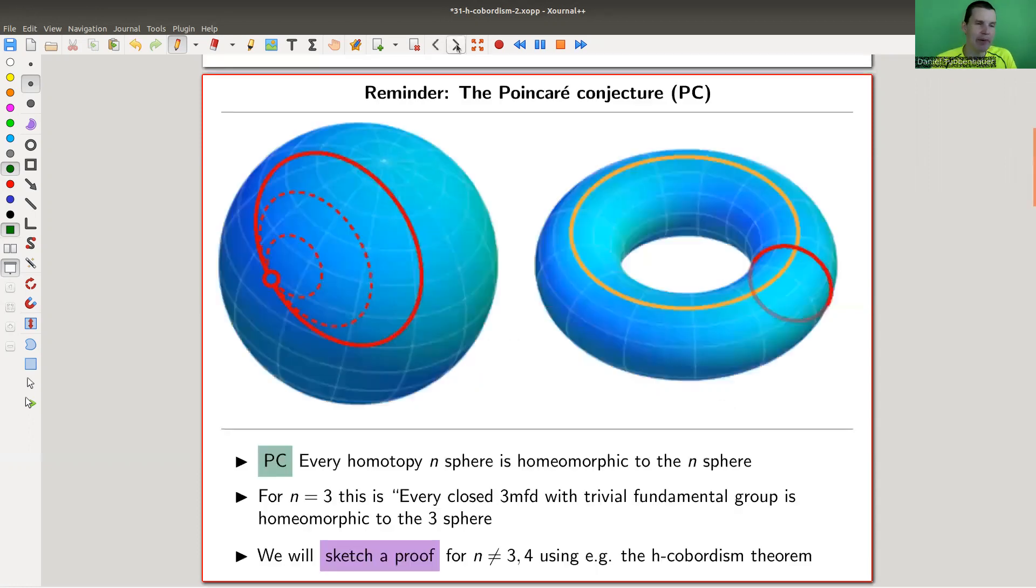So let's get started by recalling what the Poincaré conjecture is and I'm going to prove it, well proof in quotation marks obviously in this video. So Poincaré conjecture essentially is about whenever we have some manifold M and you can shrink all loops to points, then M should be the sphere, in this case S2. So here M you can't shrink those two loops, so M is not S2. That's the Poincaré conjecture.